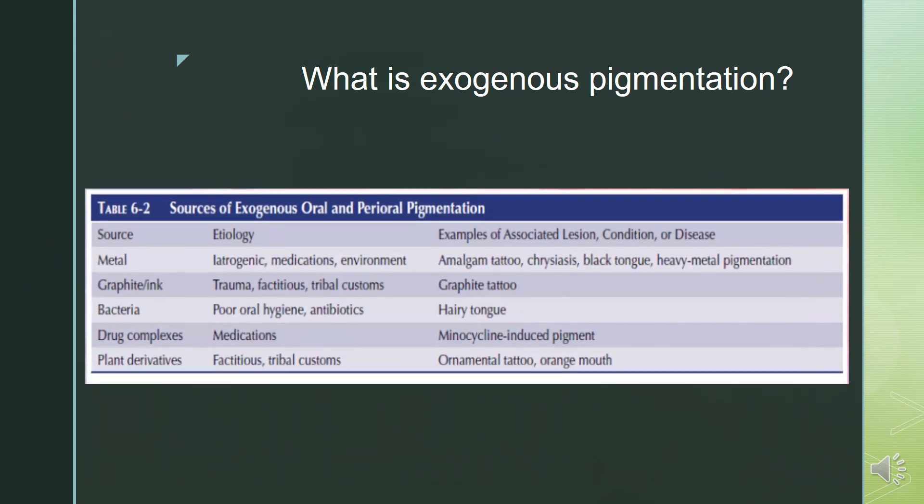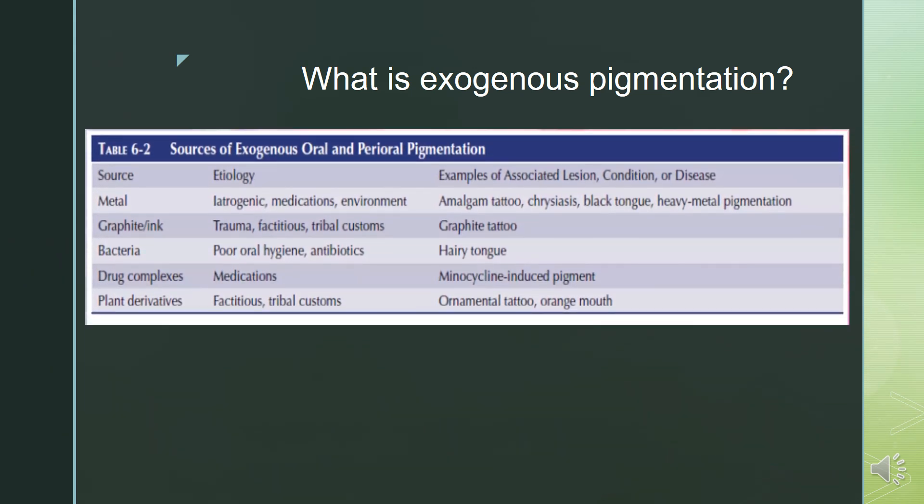Here is a table from Burket's describing the sources of exogenous oral and perioral pigmentation. If the source is metal, it can be due to iatrogenic causes, medications, or environment. Examples of such lesions can be amalgam tattoo, chrysiasis, black tongue, and heavy metal pigmentation. If the source is graphite or ink, the etiology can be trauma, factitious, or tribal customs — example being graphite tattoo.